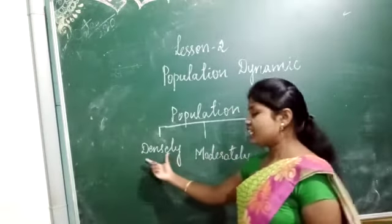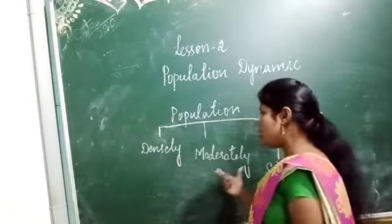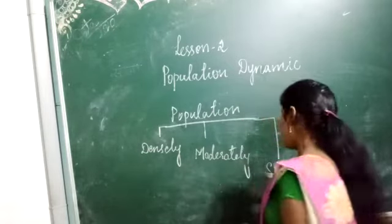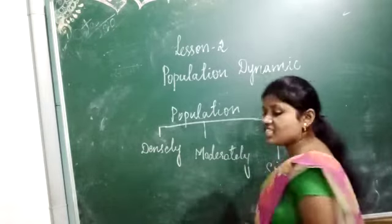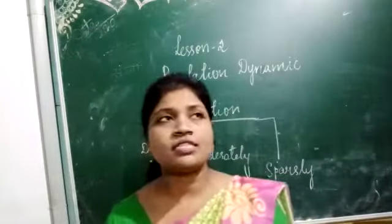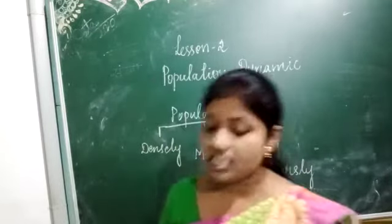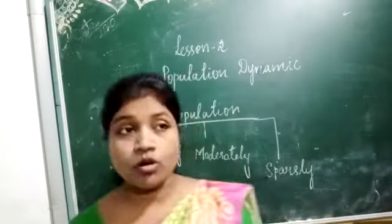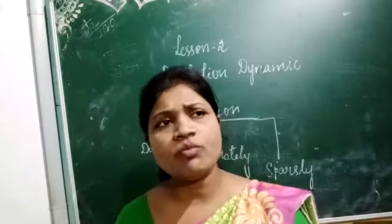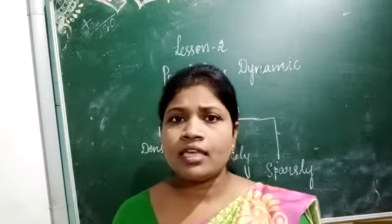The three types are: densely populated, moderately populated, and scarcely populated. Densely populated means where there are more facilities, so generally the population will be high there.